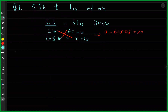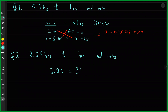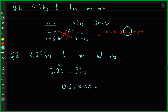Let's talk about another example. Question number two: let's say you have 3.25 hours, and you've been asked to write it as hours and minutes. In 3.25, the 3 is there directly — so I have 3 hours. And this 0.25 hour can be converted to minutes by multiplying with 60. So 0.25 multiplied by 60 gives you 15 minutes. So the answer is 3 hours and 15 minutes.